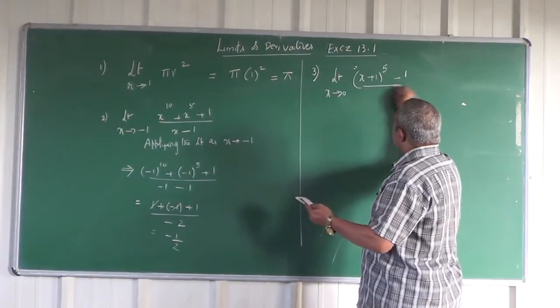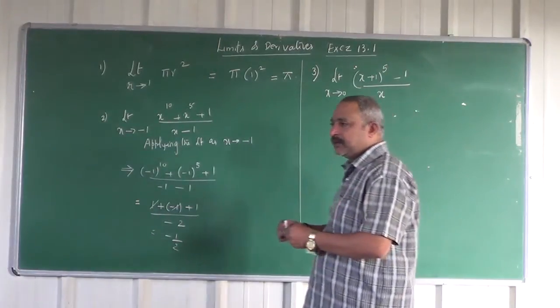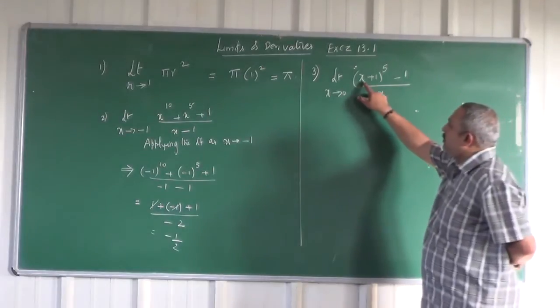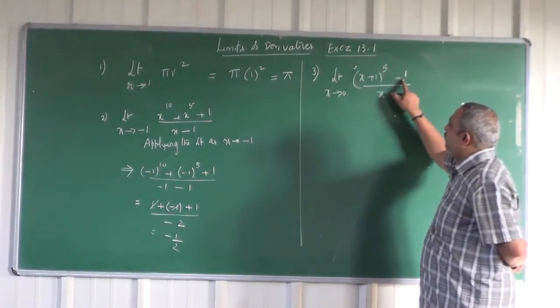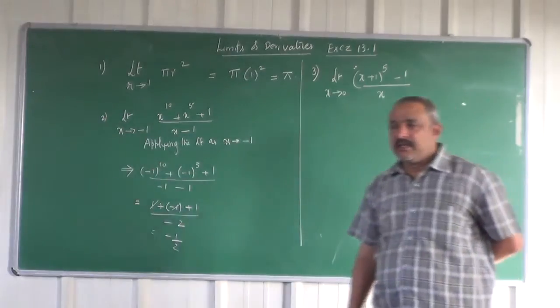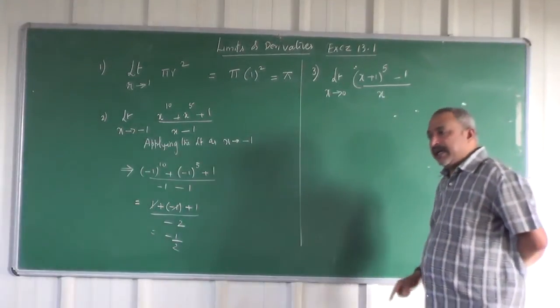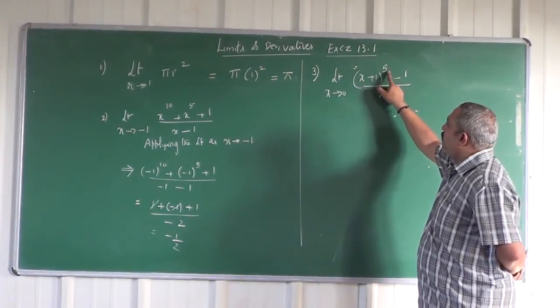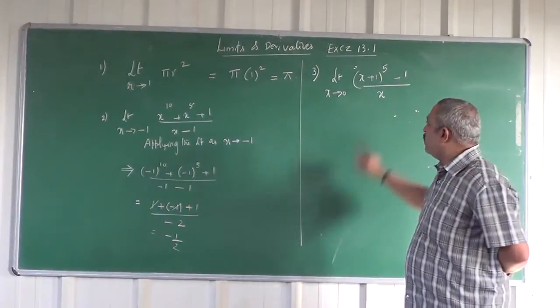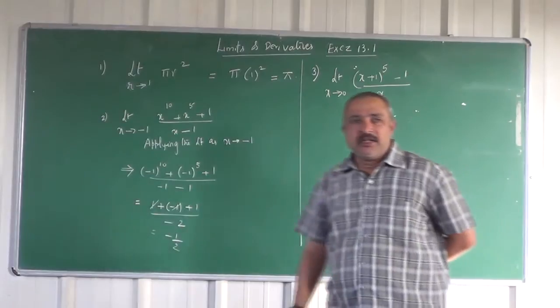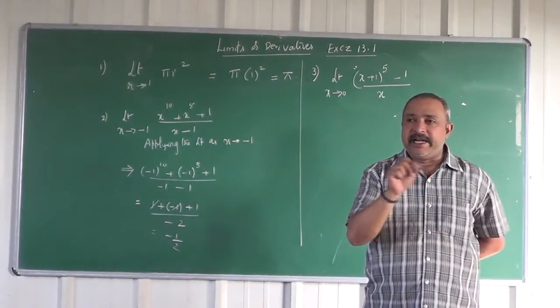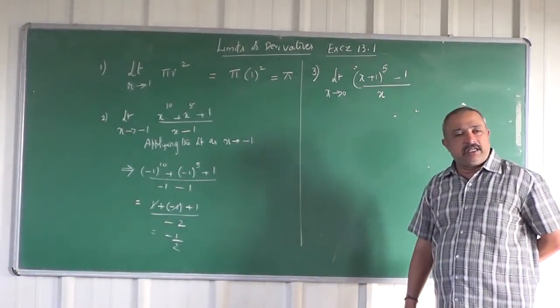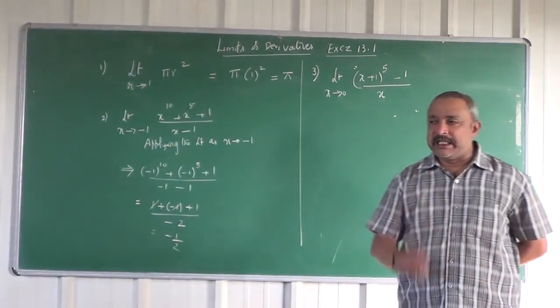Next problem: limit x tending to 0 of ((x+1)^5 - 1)/x. If you apply the limit directly, this is 0. 0 plus 1 is 1 to the power of 5 minus 1, which is 0 divided by 0. So it is in 0/0 form, an indeterminate form. Direct substitution of the limit is not possible in this problem.